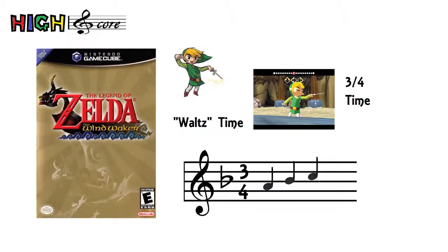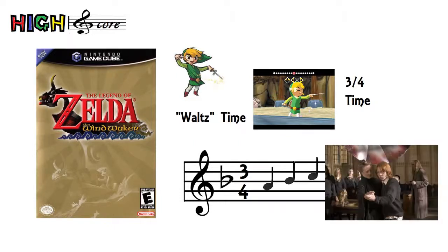3/4 time, commonly called waltz time, has three quarter notes per measure — 1-2-3, 1-2-3. Pretty much if you see the word 'waltz' in the title, it's a pretty good indication that it's in 3/4 time. Here are a couple of examples of 3/4 time music in video games.